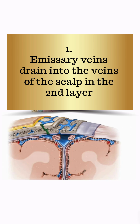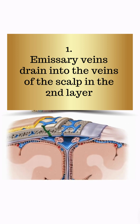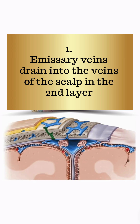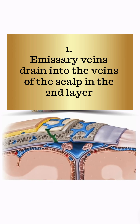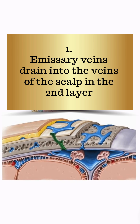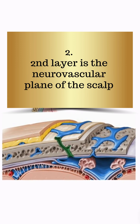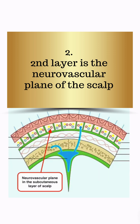Remember, the emissary veins — which connect from the dural venous sinuses — open into the second layer. These emissary veins traverse both the inner and outer table of the cranial vault. They open into the second layer because that is the neurovascular plane of the scalp — the blood vessels and nerves of the scalp run in the second layer.